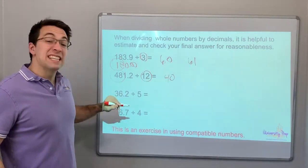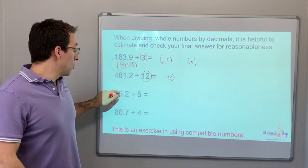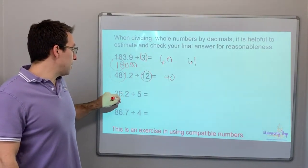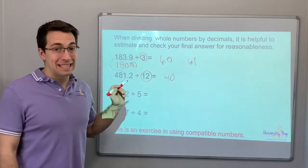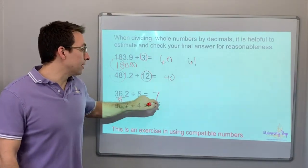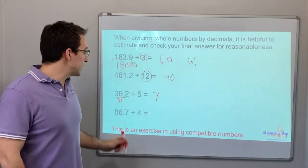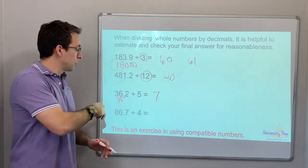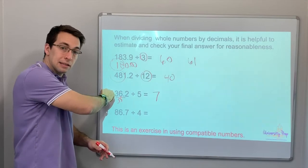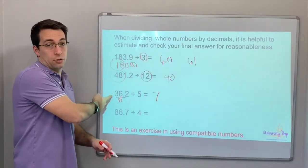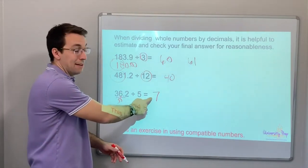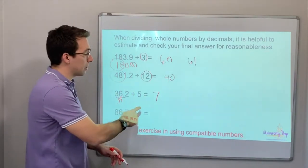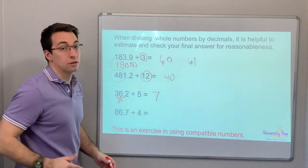What about if we did this? Let's round down, and let's say 35 divided by 5 is 7. Right? Instead of rounding up to 40, no, 7 is closer. 35 is closer to 36, than 40 is to 36. So, our answer 7, 7 times 5 is 35, is closer than 8 times 5 is 40.